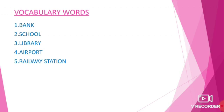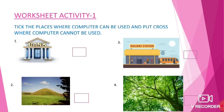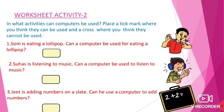Next, you have worksheet activities one and two. In activity one, you have to tick the places where computers can be used and put a cross where computers cannot be used. There are four pictures: a bank, a hill, a railway station, and a tree. Think and do it.